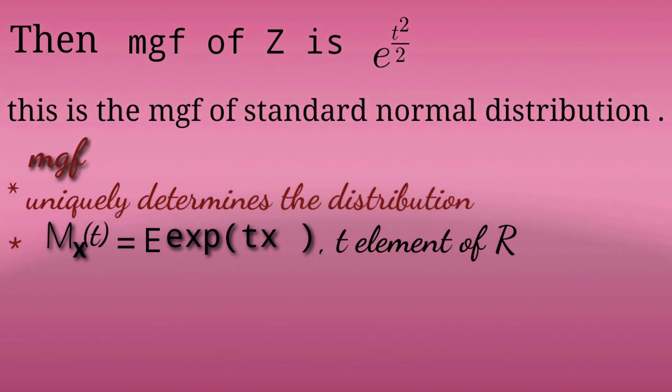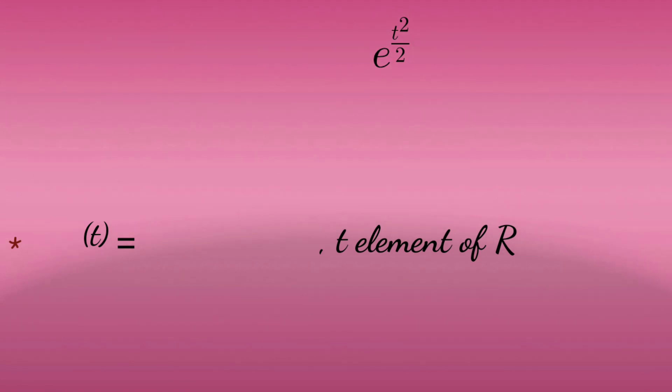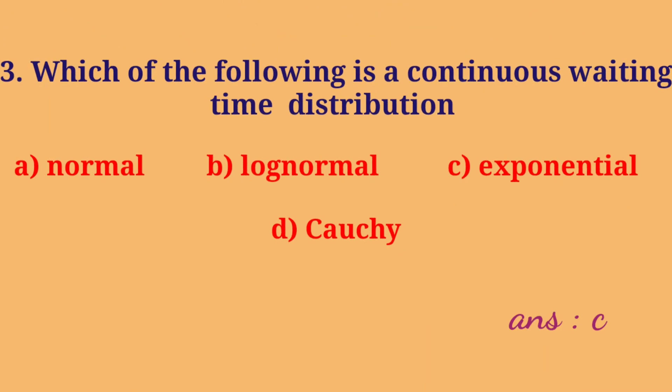Question number 3: Which of the following is a continuous waiting time distribution? Option A: Normal, Option B: Log Normal, Option C: Exponential, Option D: Cauchy.